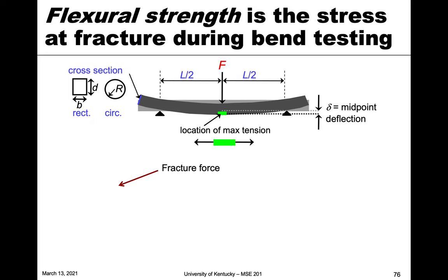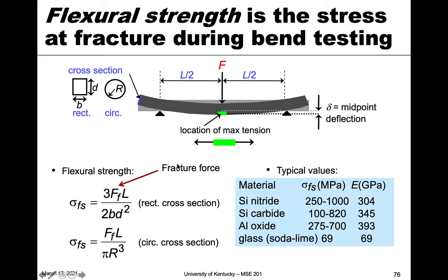We can also extract a strength called the flexural strength — the stress at fracture during bend testing, denoted σ_fs. It's calculated from the fracture force and the length and dimensions of the cross-section, either rectangular or circular. For example, glass has a relatively low flexural strength of about 69 MPa, whereas silicon nitride can reach up to around 1000 MPa. Elastic modulus similarly ranges from about 69 GPa for glass up to 300–400 GPa for ceramics like silicon nitride.